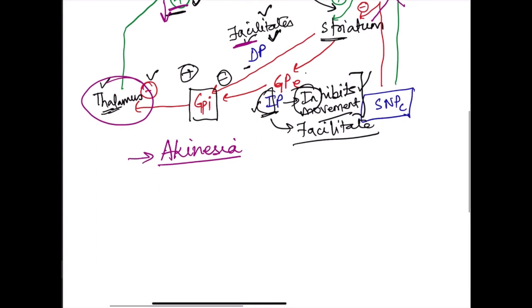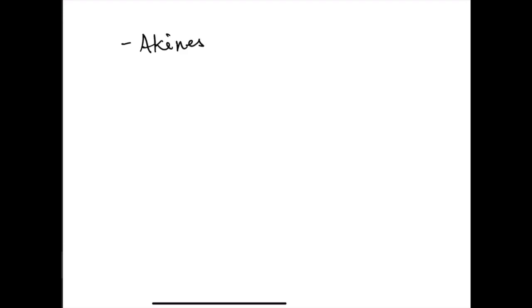The first feature is akinesia — inability to initiate movement — and there is also bradykinesia, which is extreme slowness of movement. The person has difficulty initiating movement; it requires a lot of mental effort and concentration to initiate a movement, and when movement is initiated it is very slow. That is bradykinesia.